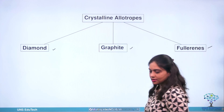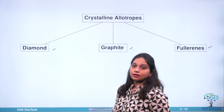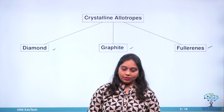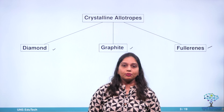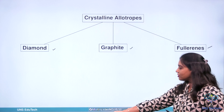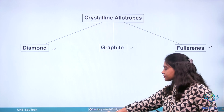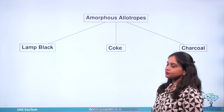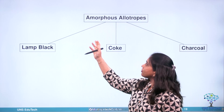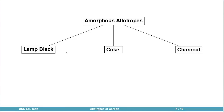We are going to discuss the various crystalline forms with the help of 3D models. The various amorphous forms of carbon are: lamp black, coke, and charcoal.